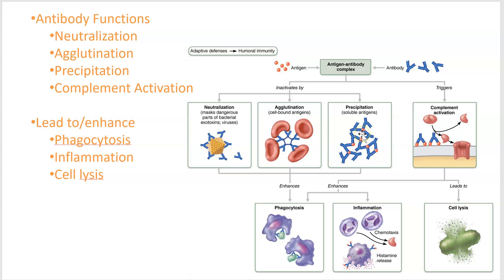Precipitation is when you take things that are dissolved and get them out of solution — for example, snake venom is dissolved in liquid, but if you want to fight it you want to precipitate it. Complement activation is a big assortment of things, but basically you're turning complement on — complement is that protein family that is a tool to fight infection. All of these lead to helping phagocytosis, stimulating the inflammatory response, or directly killing the dangerous cells.